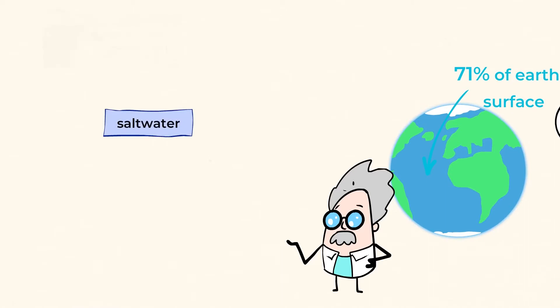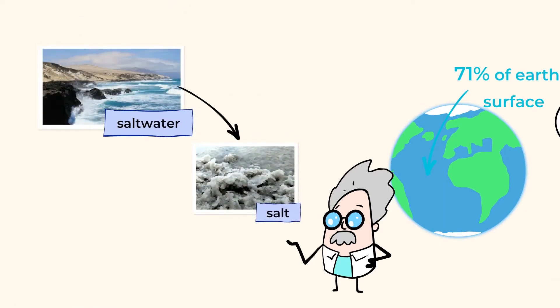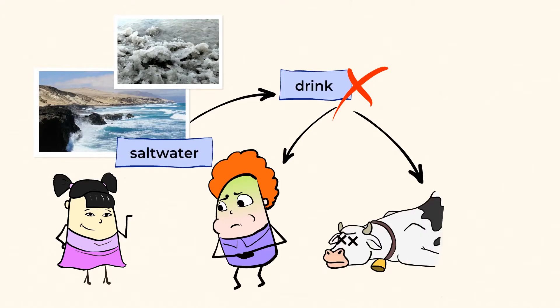most of that is salt water in our oceans. An ocean is a huge body of salt water, and we can't drink salt water because it contains salt and would make humans and animals very sick.